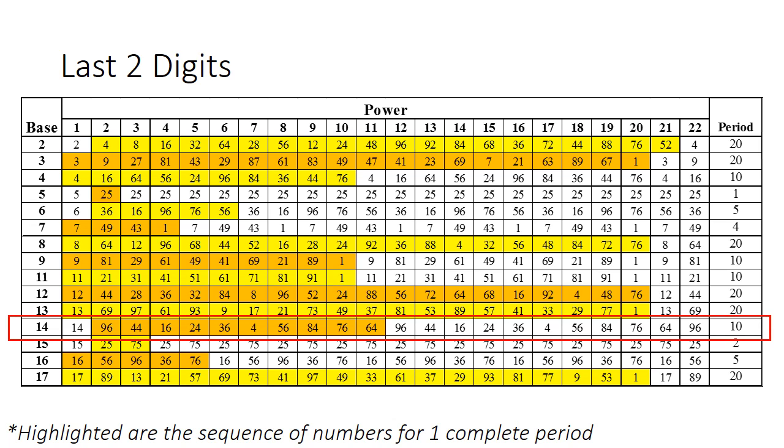Similarly, if you look at the powers of 14, it begins with 14, but it never goes back to 14. The period repeats again from 96. I'm placing the detailed Excel spreadsheet of the last two digits in the info section for reference. You can look through it and see if you can spot more patterns in the last two digits.